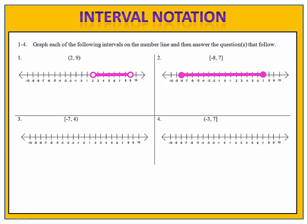On exercise 2, we have endpoints at negative 8 and positive 7. Notice that negative 8 has a bracket, which tells us it is included in the set — we use a solid circle on the number line. 7 also has a bracket, so we use a solid circle to indicate it's included as well. Exercise 3: we have from negative 7 to positive 4. Negative 7 is included — it has a bracket, so we have a solid circle. 4 has a parenthesis, meaning an open circle — 4 is not included in this set.